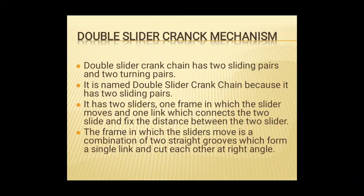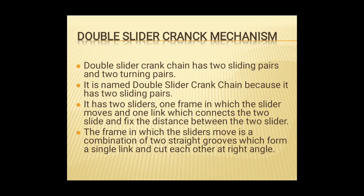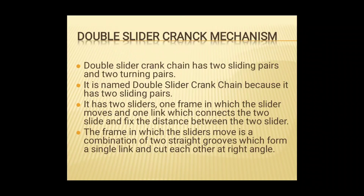Double slider crank mechanism has 2 sliding pairs and 2 turning pairs. As the name suggests, it has 2 sliders and 1 crank. The two sliders move into a frame in a straight line, connected by a connecting link which shows the distance between the sliders. The frame where the two sliders move is a closed frame with two straight-line slots joined together at right angles.